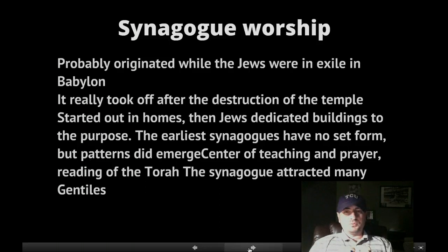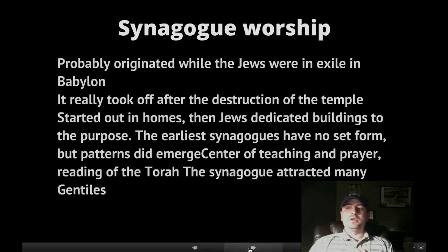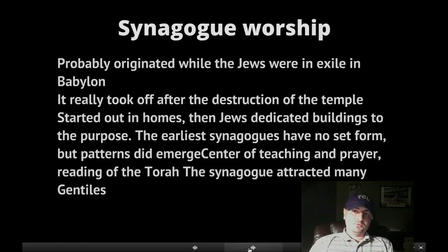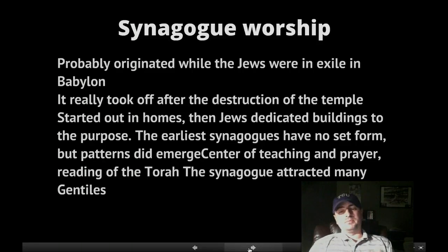With both Christianity and Judaism, the earliest synagogues had no set form — whenever they first start moving out of homes into dedicated buildings, all of them are different. They might have taken over a warehouse or a house. Buildings have long histories in the ancient world. No two synagogues were the same, which makes it very difficult — or impossible even — for an archaeologist to find a first-century synagogue because you have nothing to compare it to. Patterns did later emerge, which is a relief. The synagogue was a center of teaching, prayer, and reading the Torah.